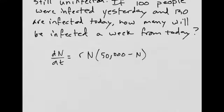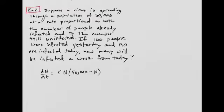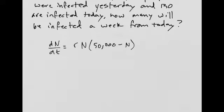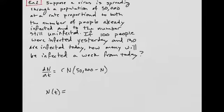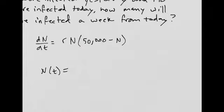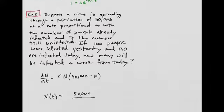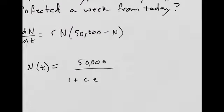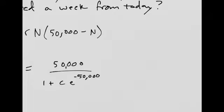With all of this, we can write out our solution using what we had before. We don't have to go through all the steps to solve it. We'll have N(t), which is the number of infected people. That's k was 50,000. So 50,000 divided by 1 plus c times e to the negative 50,000 times r, some rate we don't know yet, times t. So we'll leave it like that.